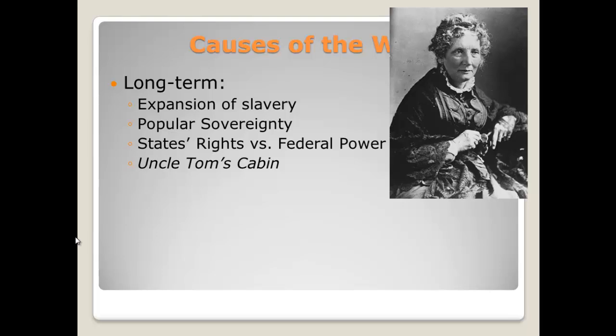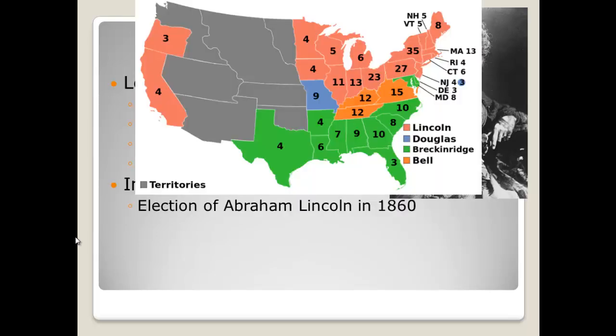A very famous book written by Harriet Beecher Stowe called Uncle Tom's Cabin was published and really turned a lot of people in the North into abolitionists. She lived in Cincinnati for a while, so she hails from that great city.